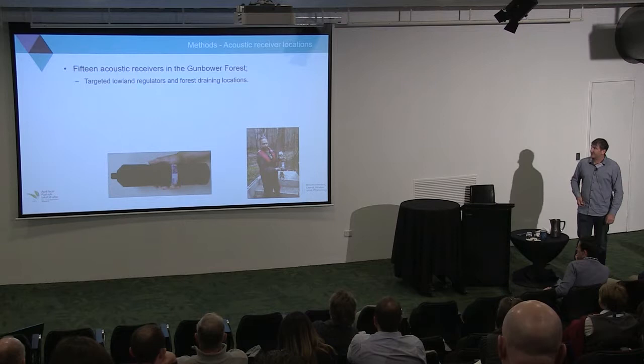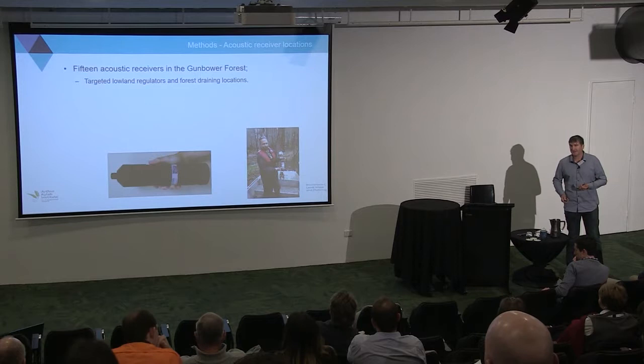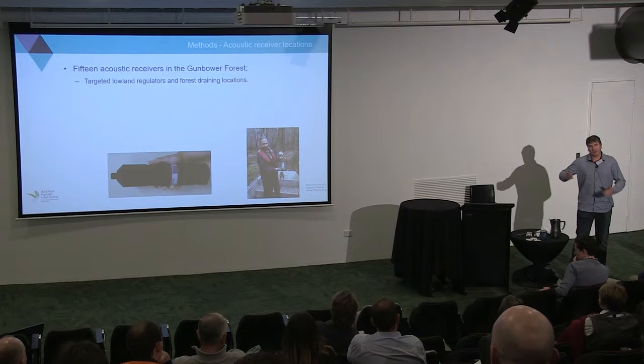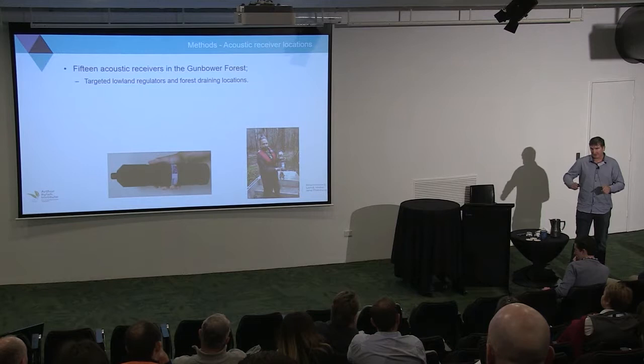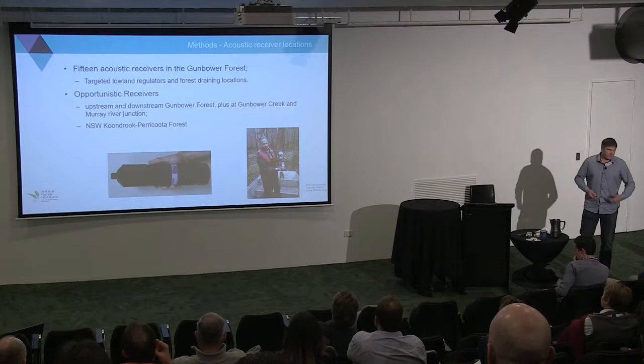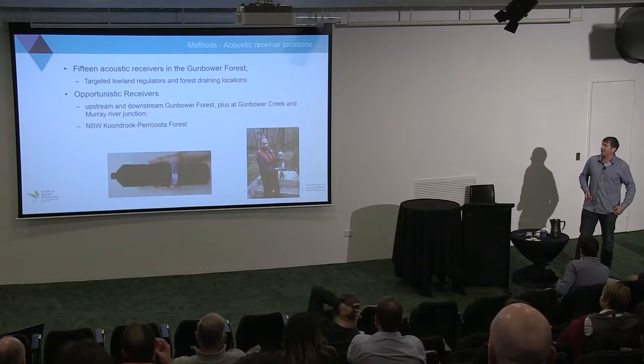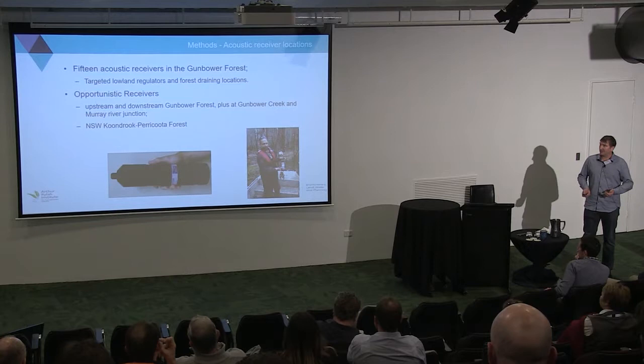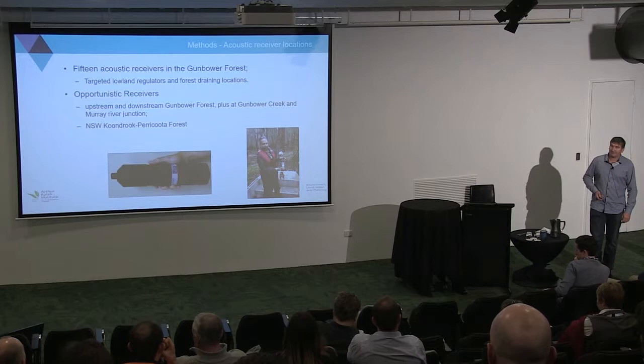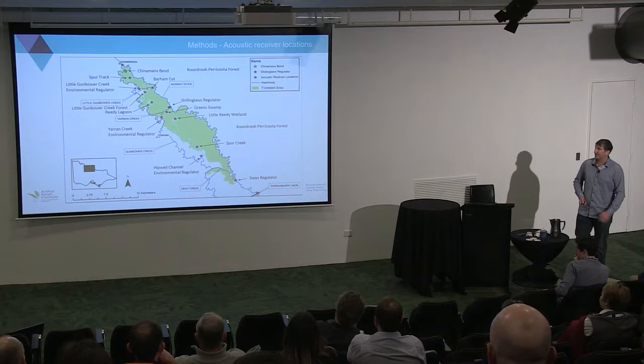We put 15 acoustic receivers into the forest, really targeting those lowland regulators and forest-draining locations. For some of those we had a receiver on the forest side of the regulator and also on the river or creek side, to determine that fish had actually moved through that location. We also knew there were opportunistic receivers on the Goulburn — as Wayne presented today — and receivers upstream and downstream in the Murray and at the Gunbower Creek-Murray junction. New South Wales also had some in the Koondrook-Perricoota Forest, and those add real value to this project.